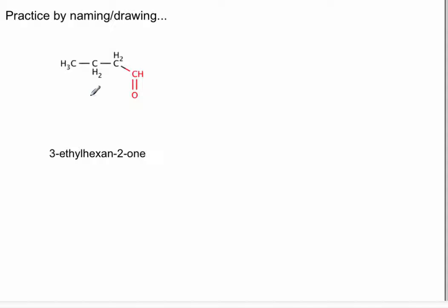All right, so let's have a little bit more practice here. So here's my 1, 2, 3, 4. So that's butanal. Four carbons, aldehyde, terminal group.